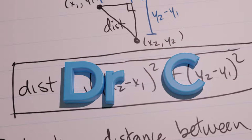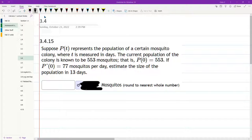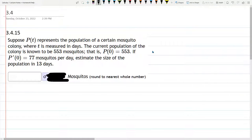So we have a problem here where we're given information about a population growing and all we're given is the initial population that is 533 and the derivative which is 77 and they're both at time 0, in this case time measured in days.